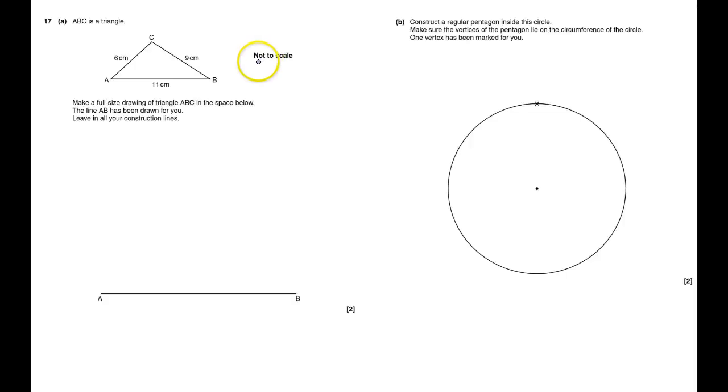This is ABC's triangle. It says it's not to scale, but make a full size drawing in the space below. It's drawn AB and that is 11 centimeters. Leaving all the construction lines means I need to show what I'm doing.